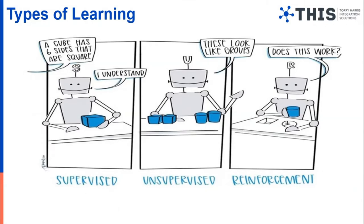First of all, we have supervised learning. When we talk about supervised learning, we will have an external supervision on the machine — it can be in any form, a domain expert, or we can get it in the form of files or other data. Here we can see that the machine has a cubical object in its hand, and someone is telling the machine a cube has six sides that are square. The machine replied, 'I understand.' So from the next time the machine sees a cube, it will understand that it is a cube.